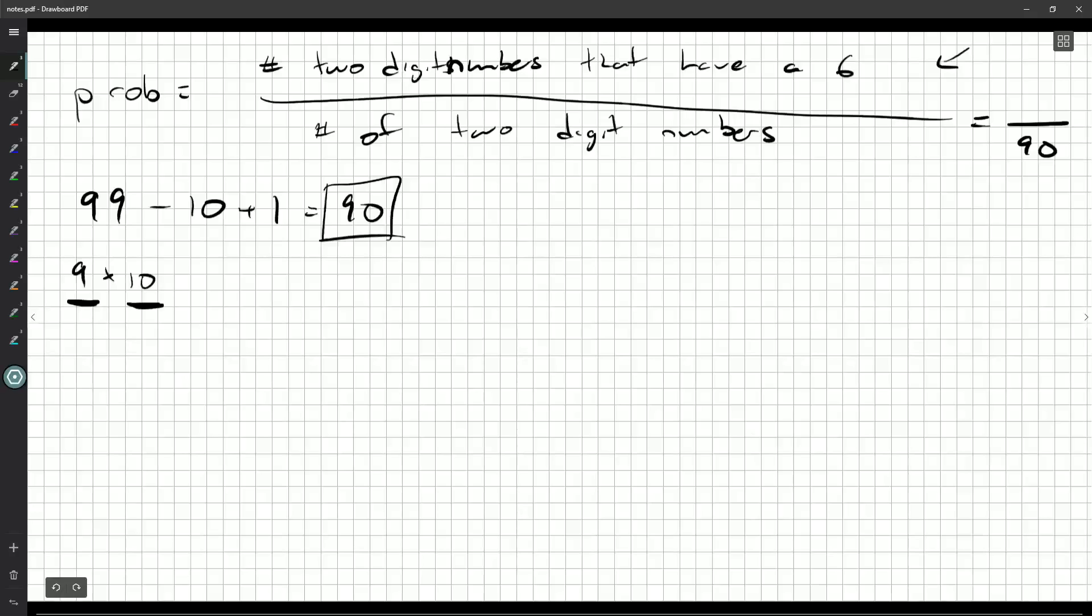But how many two-digit numbers have a 6 in them? Well, we could list them all out. That's entirely possible. And that's one way to do it. But you'll notice it's taking me a little bit of time here. And I've skipped over the 60s. That's because I'm going to do them together.